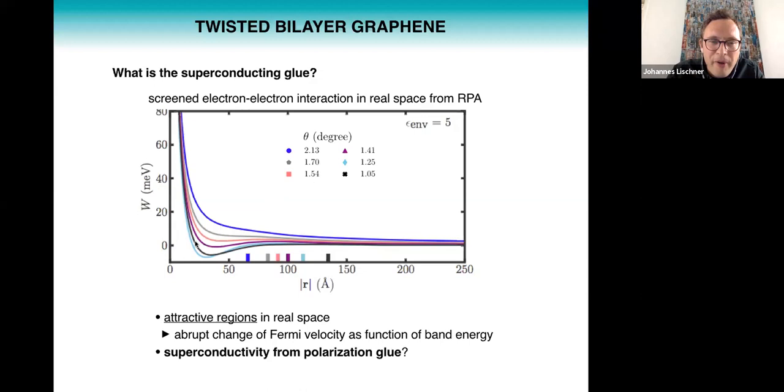And of course this attractive region could potentially give rise to superconductivity. Now it's also interesting to think about the origin of this attractive region and we believe this actually has to do with the fact that there is a discontinuity as a function of band energy and the Fermi velocity. So I've told you that the Fermi velocity of the bands close to the Fermi energy is strongly renormalized but at higher energies it's not, so there is this discontinuity in the Fermi velocity. When you Fourier transform into real space it gives you these attractive regions.